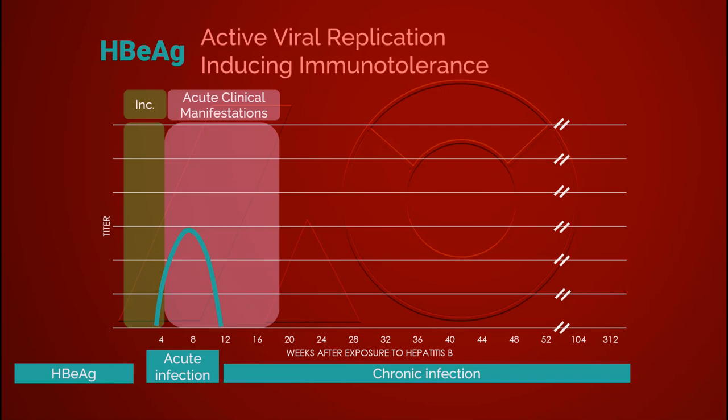The immunotolerance phase is the first stage of chronic hepatitis B infection. During this phase, viral replication is active and viral load is high. However, with the presence of e antigen, our immune response is not activated, and therefore there is no damage to the liver cells.